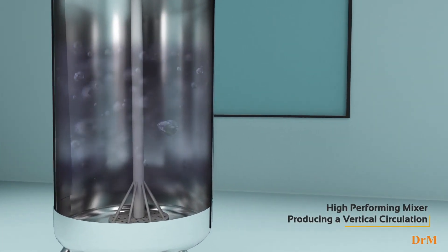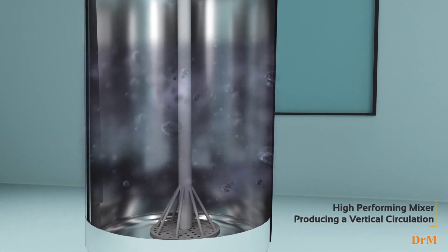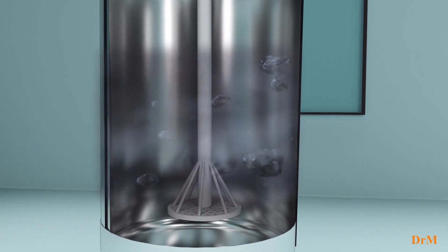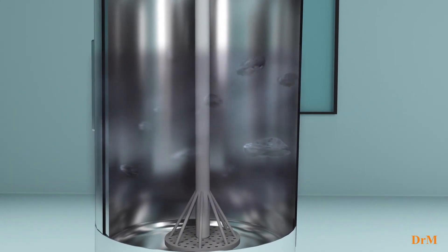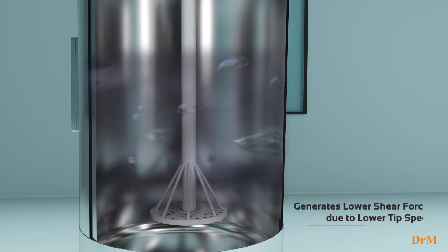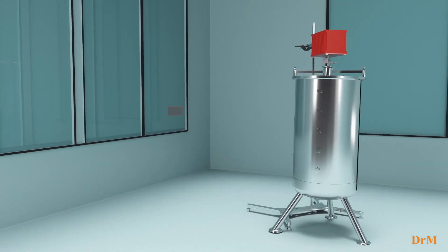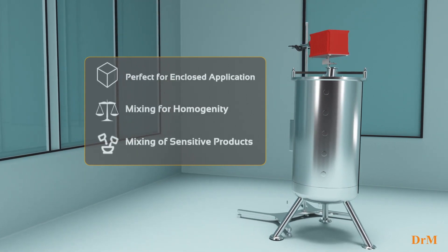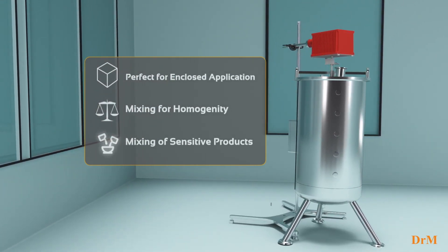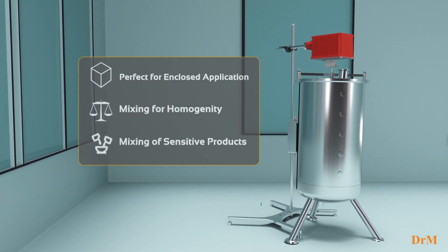The Fundamix is an extremely high-performing vibratory mixing device producing a vertical circulation. The mixer ensures lower shear forces as it functions on a lower tip speed compared to conventional agitators. The Fundamix is perfect for enclosed applications where homogeneity and mixing of sensitive product is the primary requirement.